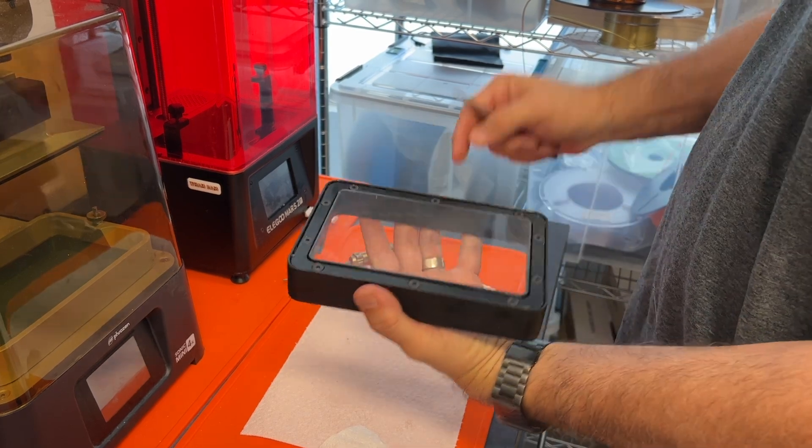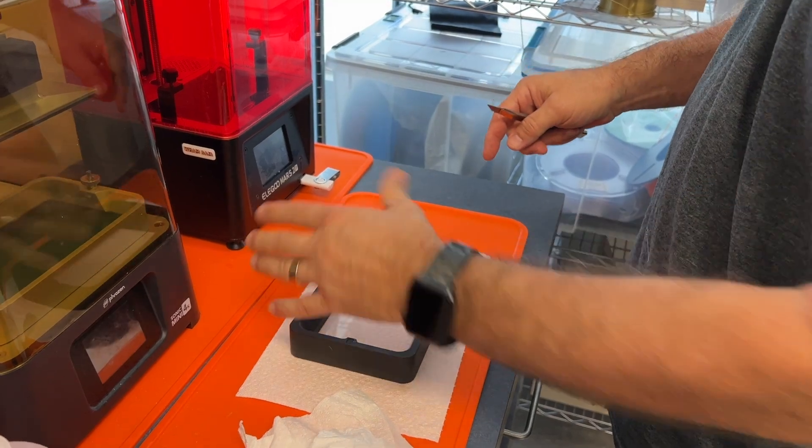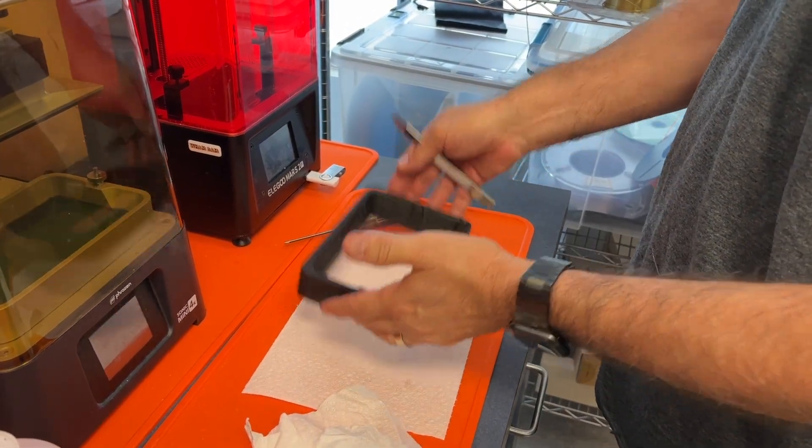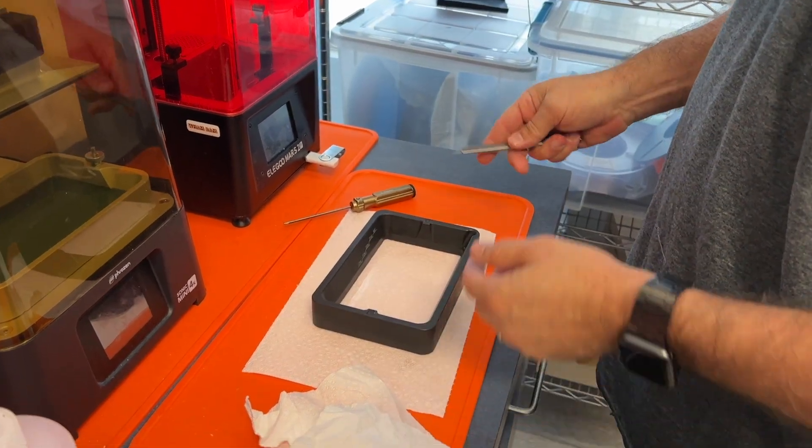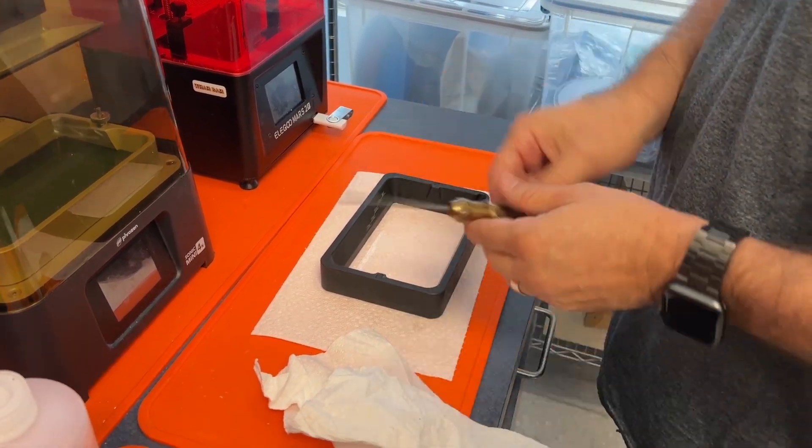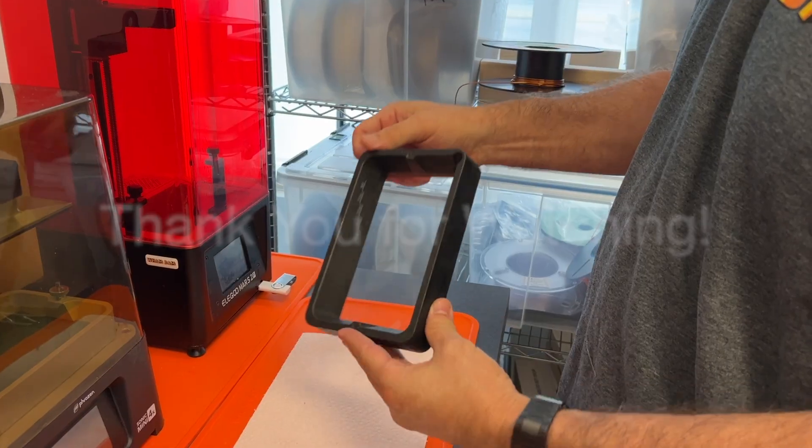And you'll notice the whole time I'm working either over a piece of paper towel, trying to keep the FEP clean and free. If I put it down, I put it down on a new piece of paper towel. And there it is, perfectly installed. And we're ready to go and print. I hope this was helpful. Let me know if you guys have any other tricks and find it to be very successful.